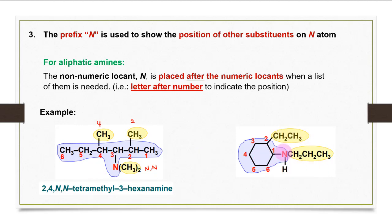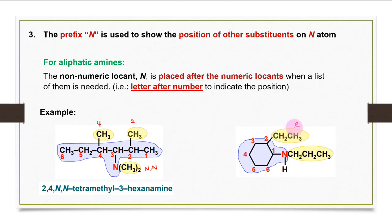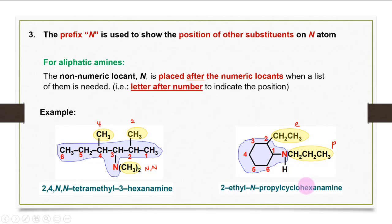In another example, the largest carbon framework is a cyclic structure, making the parent cyclohexanamine. An ethyl group is attached at carbon two, and a propyl group is attached to nitrogen. Because these are different substituents, we follow alphabetical order — ethyl (E) before propyl (P) — giving the full name 2-ethyl-N-propyl-cyclohexanamine.